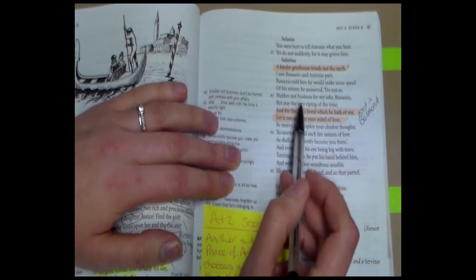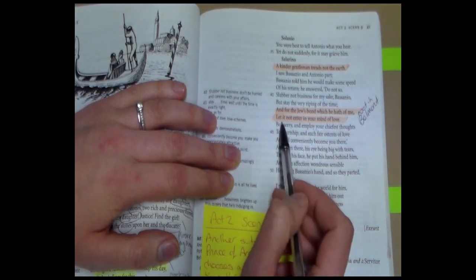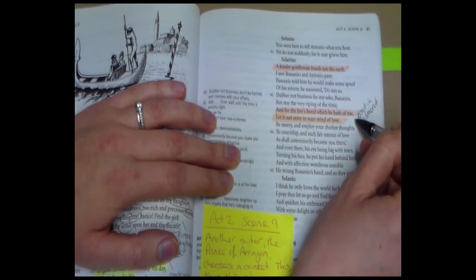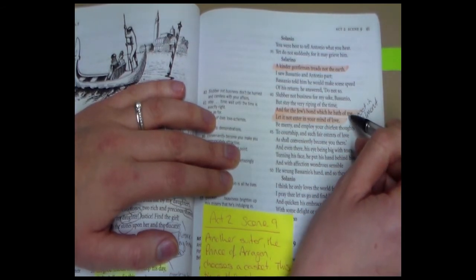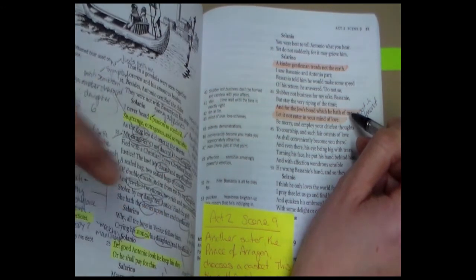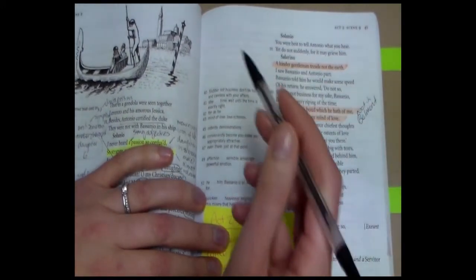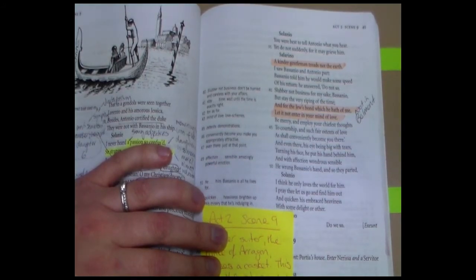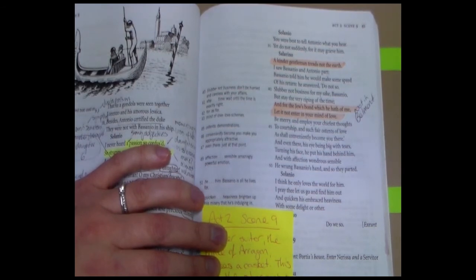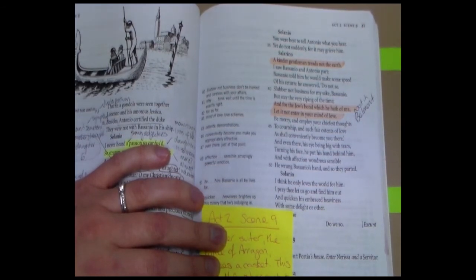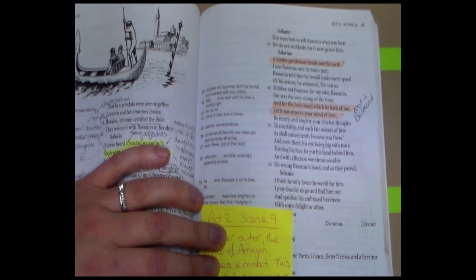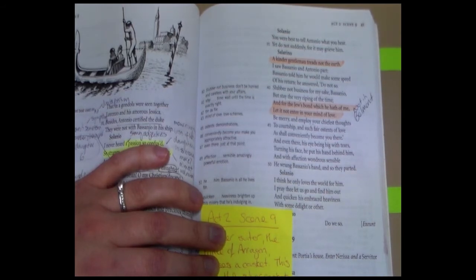And we're reminded of something very lovely that Antonio did for Bassanio. So as Bassanio left, he said, and for the Jews bond which he hath of me, let it not enter your mind of love. So he said to Bassanio, who's left for Belmont, don't think about the bond, don't take the worries about money with you to Belmont. Now that fits with the description we've had so far of Belmont, which is that it's not a place of money, it's a place of love. It also shows us how kind Antonio is, because he hasn't wanted to burden his friend Bassanio with any worries about the money and about the bond. He's just told him to go, to win Portia, to fall in love and to enjoy this moment.